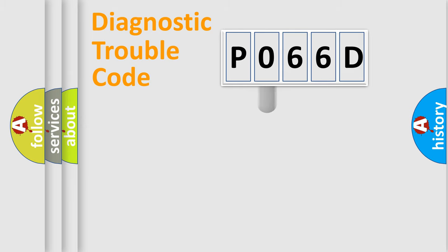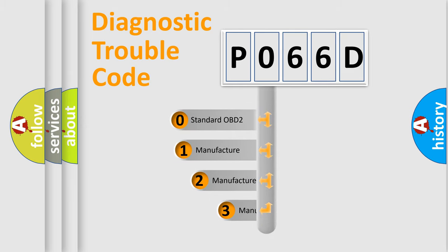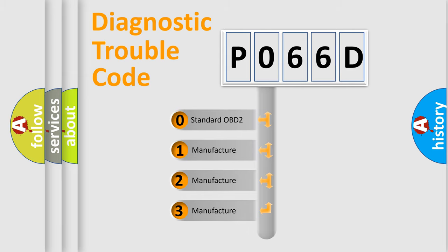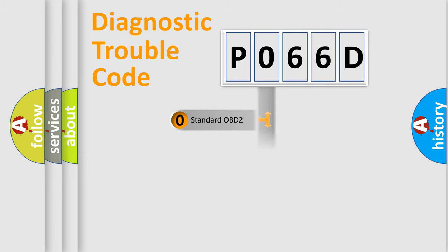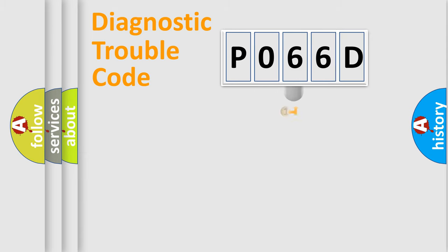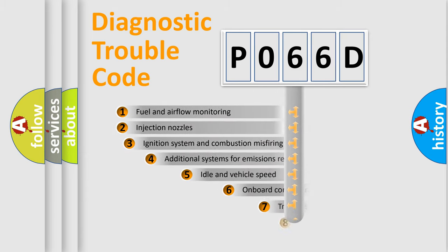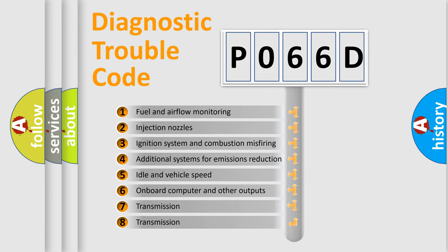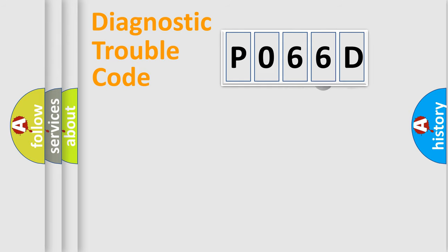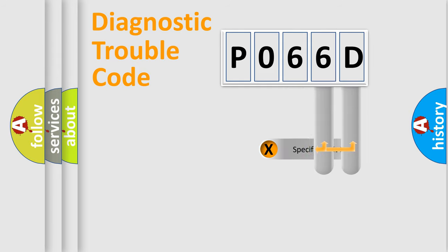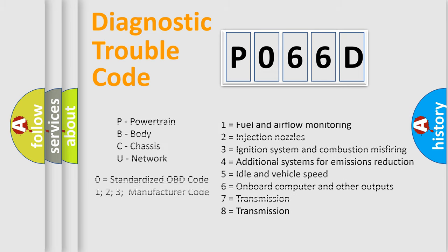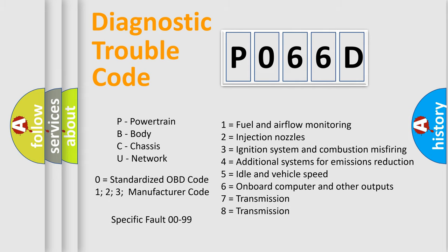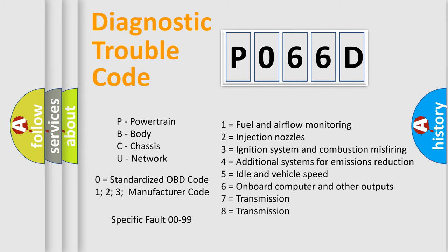This distribution is defined in the first character of the code. If the second character is expressed as zero, it is a standardized error. In the case of numbers 1, 2, or 3, it is a manufacturer-specific error expression. The third character specifies a subset of errors. This distribution is valid only for the standardized DTC code, and only the last two characters define the specific fault of the group.